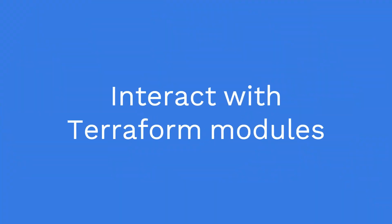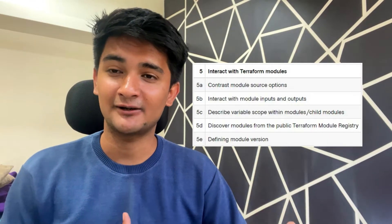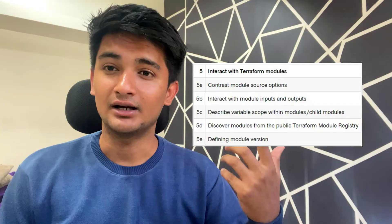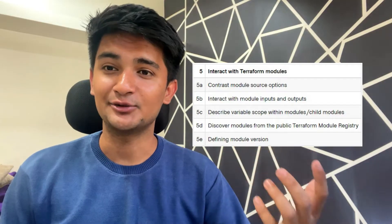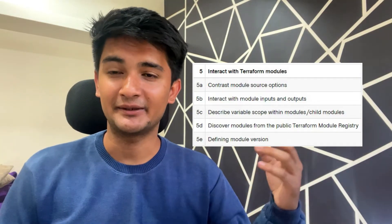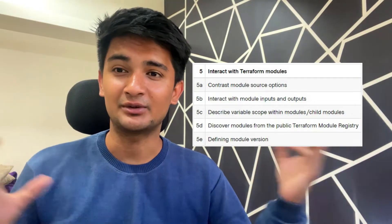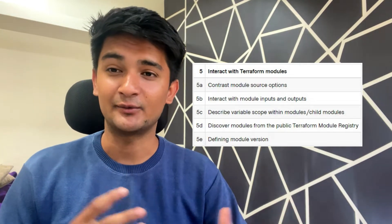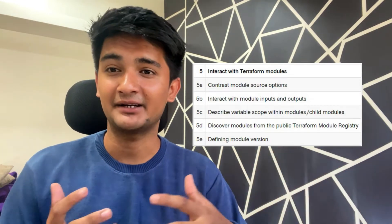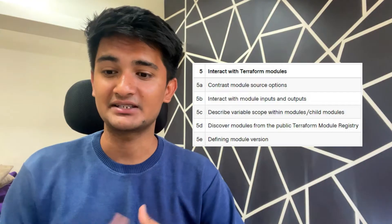Number five is interacting with Terraform modules. You need to understand how modules work in Terraform: what is a child module, what is a root module, how you can use modules, why modules are used, how to pass an argument from one module to another, how to version a module, what is the public Terraform module registry, and what is the private module registry.